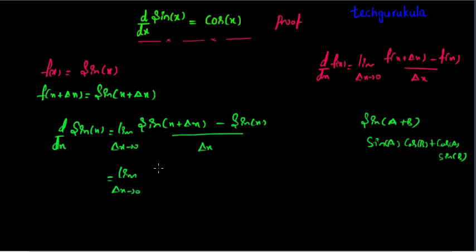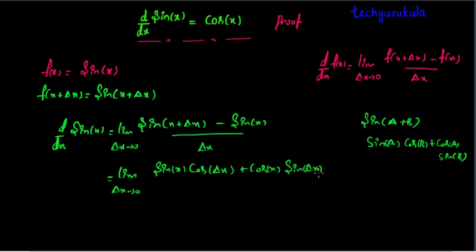So, this becomes: sine x cos Δx plus cos x sine Δx minus sine of x, whole divided by Δx.